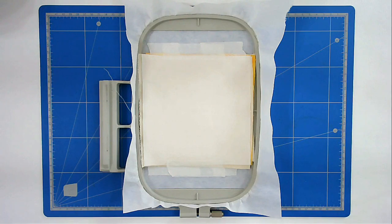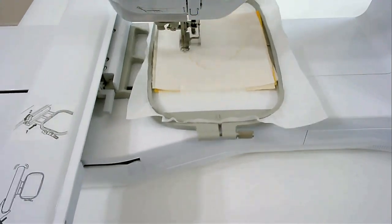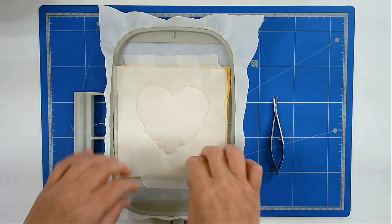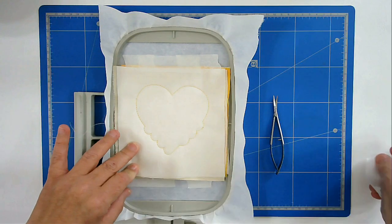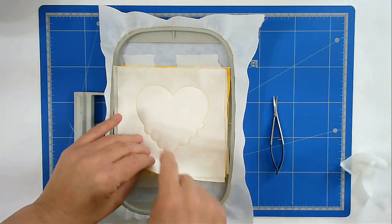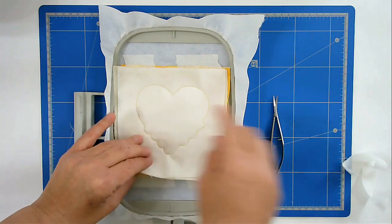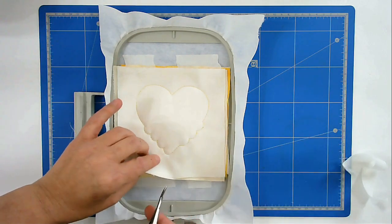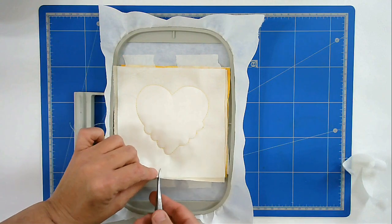So I'm now going to pop that into my machine and stitch round number three and that's going to secure the center fabric. I'm going to remove the tape. And I'm now going to trim up around the edge of this stitch line, close to it, taking care not to cut it.